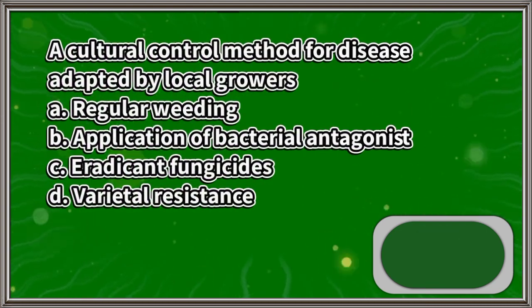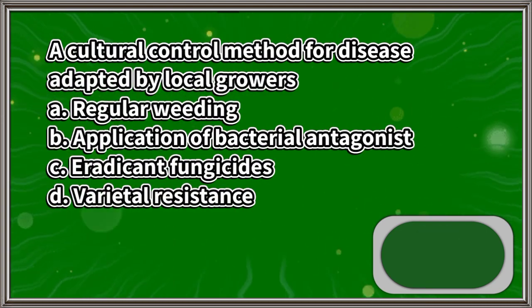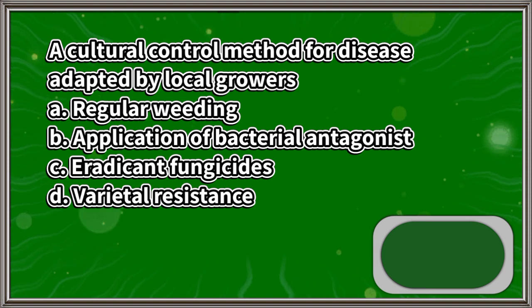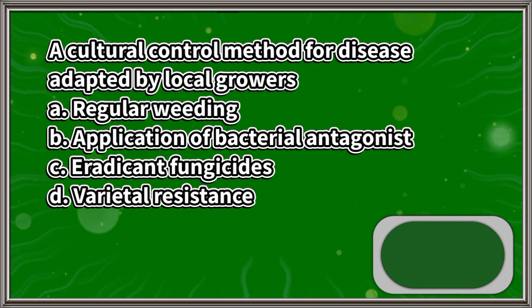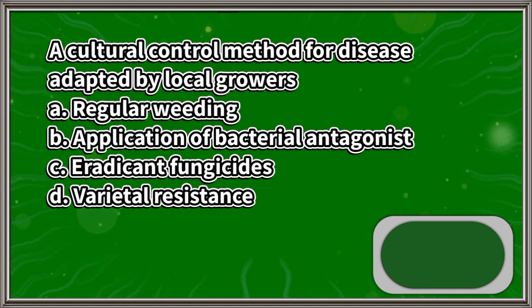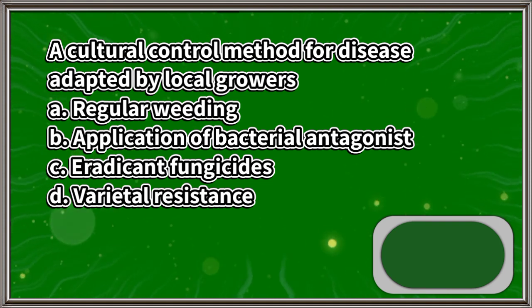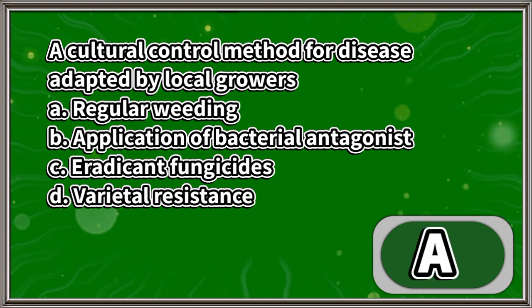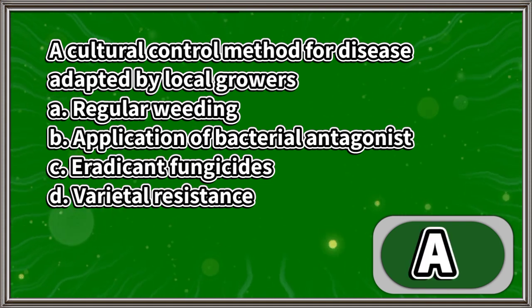A cultural control method for disease adapted by local growers: A. Regular weeding, B. Application of bacterial antagonist, C. Eradicant fungicides, D. Varietal resistance. The answer is letter A.